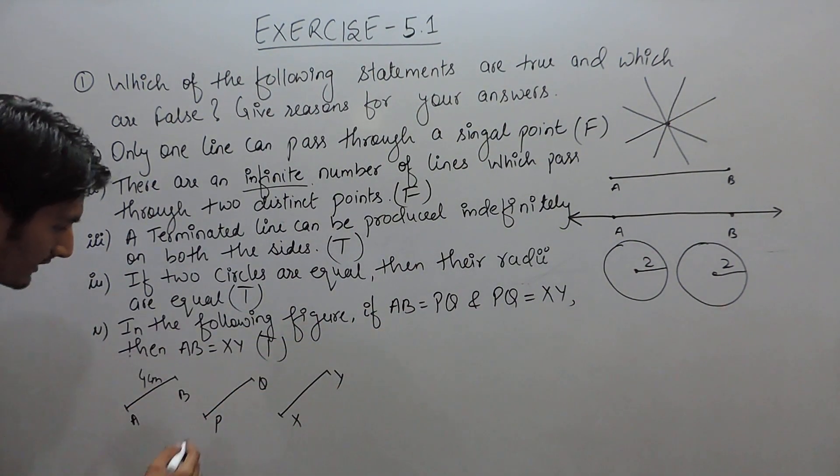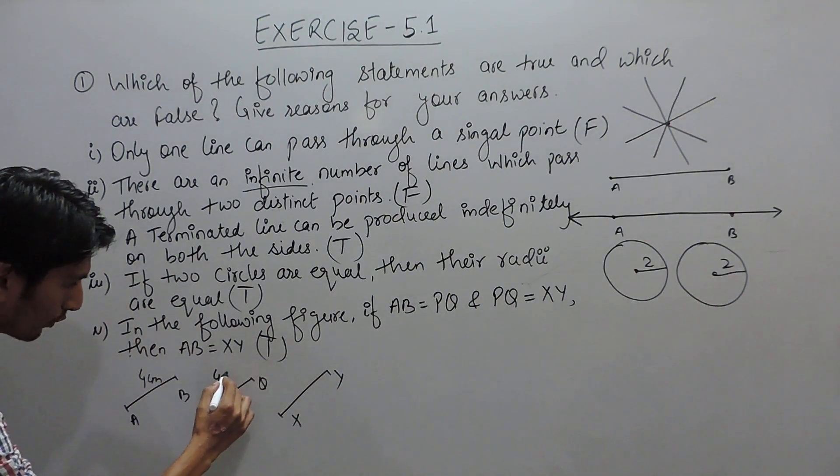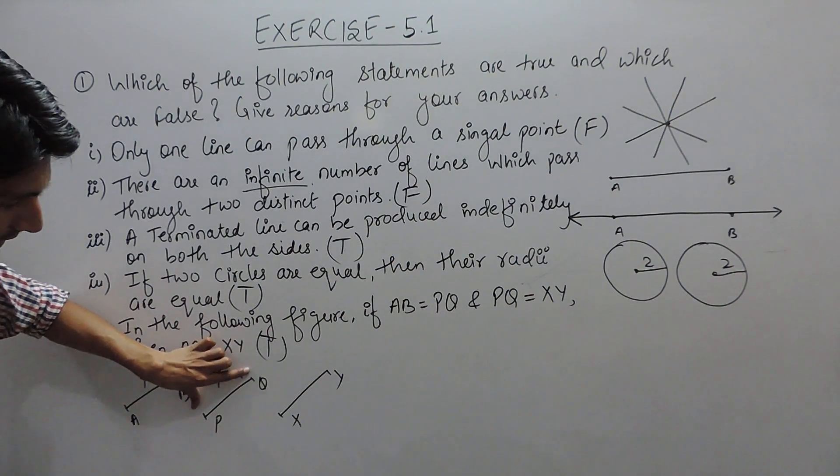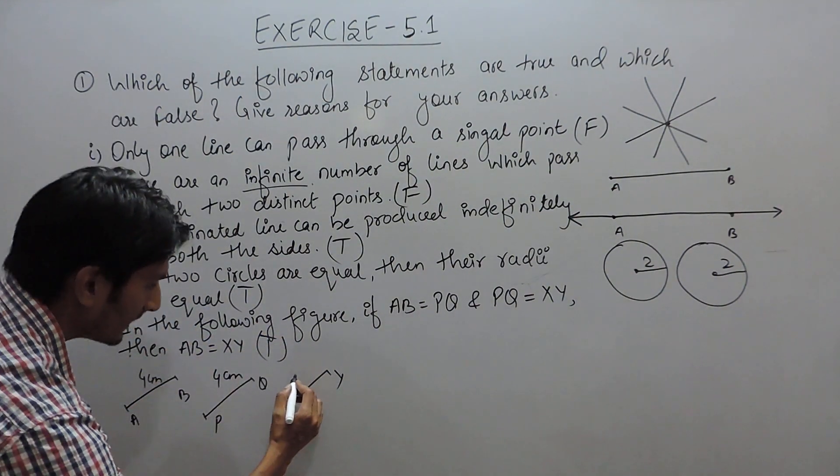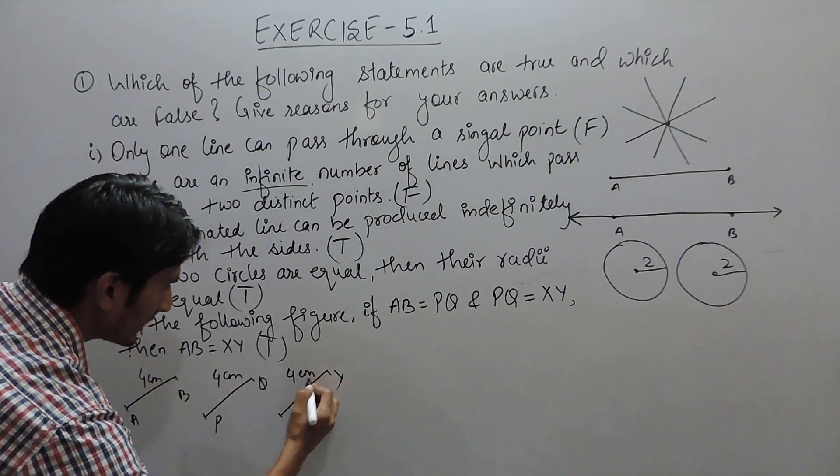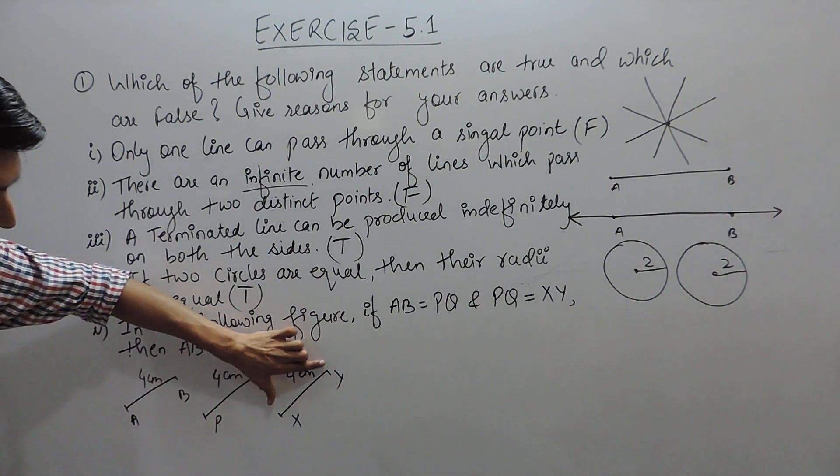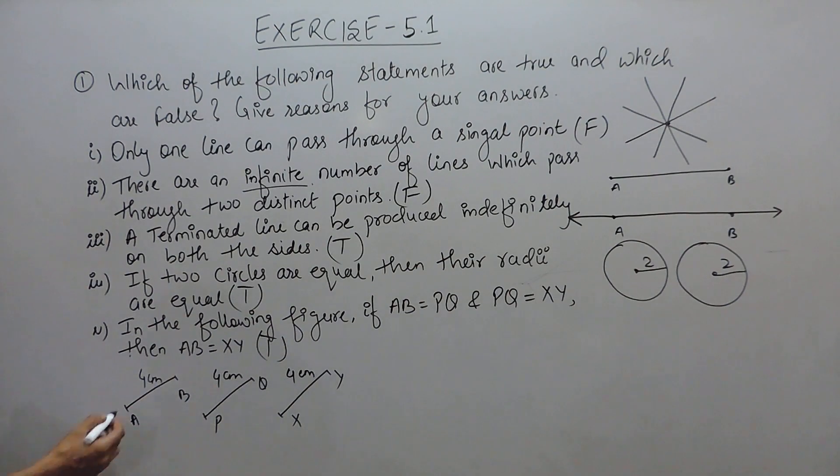So obviously PQ must be also 4 cm of length, and again PQ is given as equal to XY, so the length of XY must be 4 cm. And because AB is 4 cm long and XY is 4 cm long, obviously the length of both these lines must be equal.